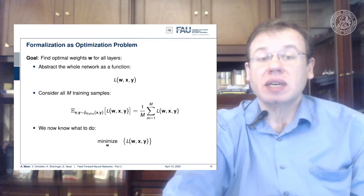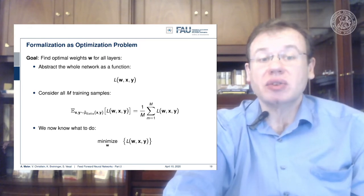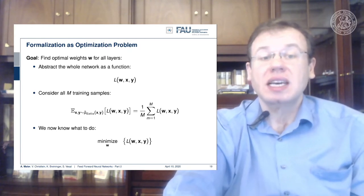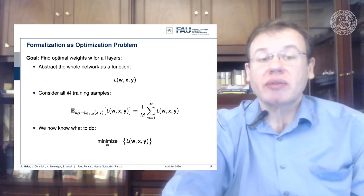The inputs are the weights w, the input vector x, and y which is our ground truth labels. We have to consider all m training samples.